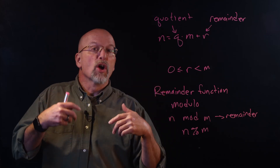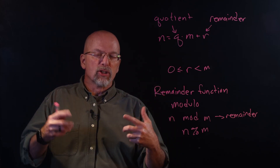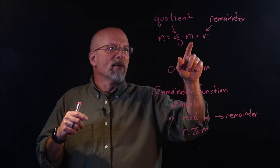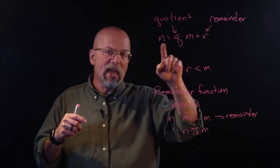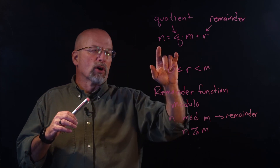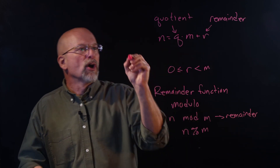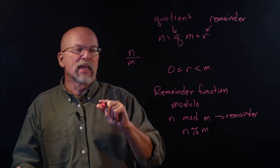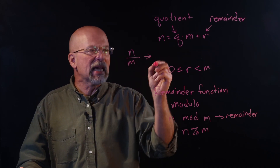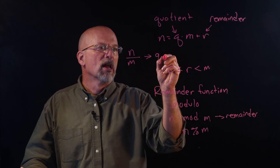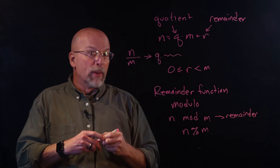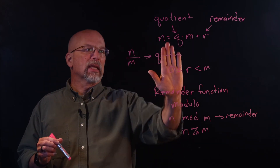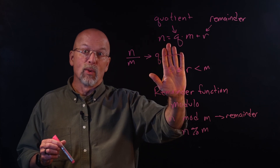In integer division on the computer, the result is given as a truncated integer from dividing n by m. So if you divide m into n, you get a quotient with a remainder, but in integer math on the machine, that remainder goes away.